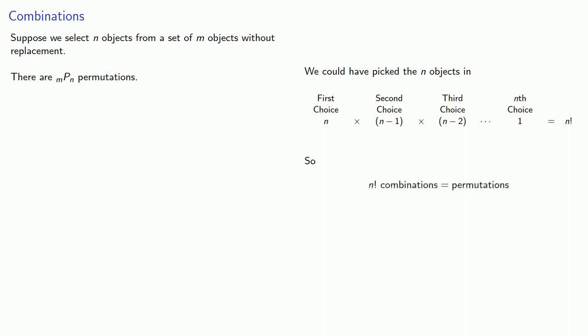And so n factorial times the number of combinations gives us the number of permutations. And so that says the number of combinations will be m permute n over n factorial.